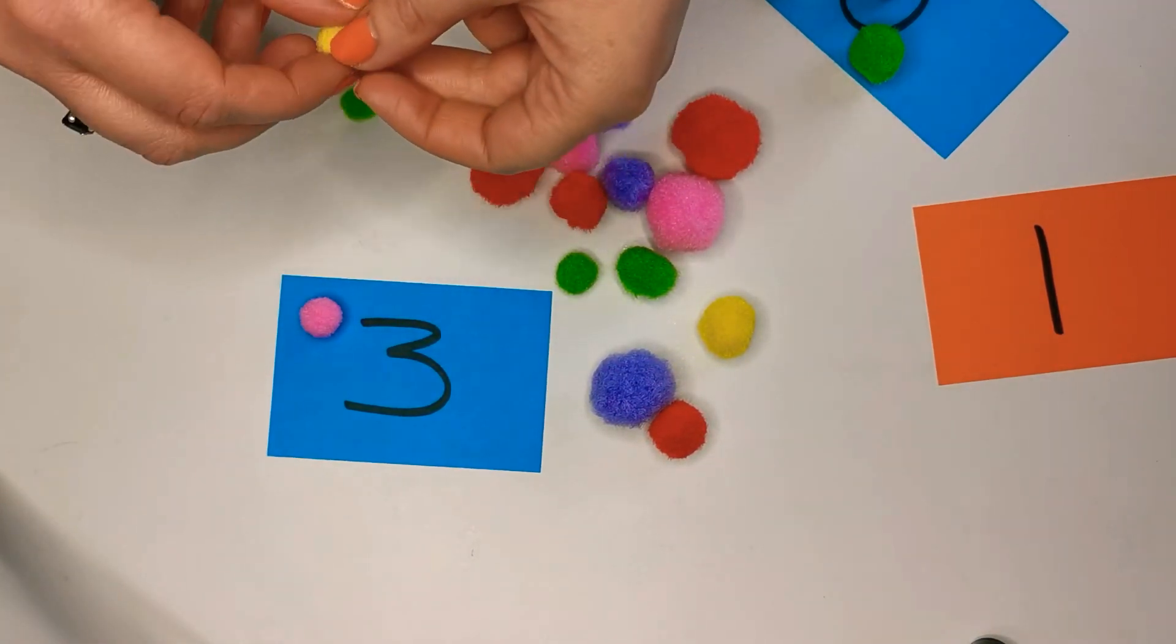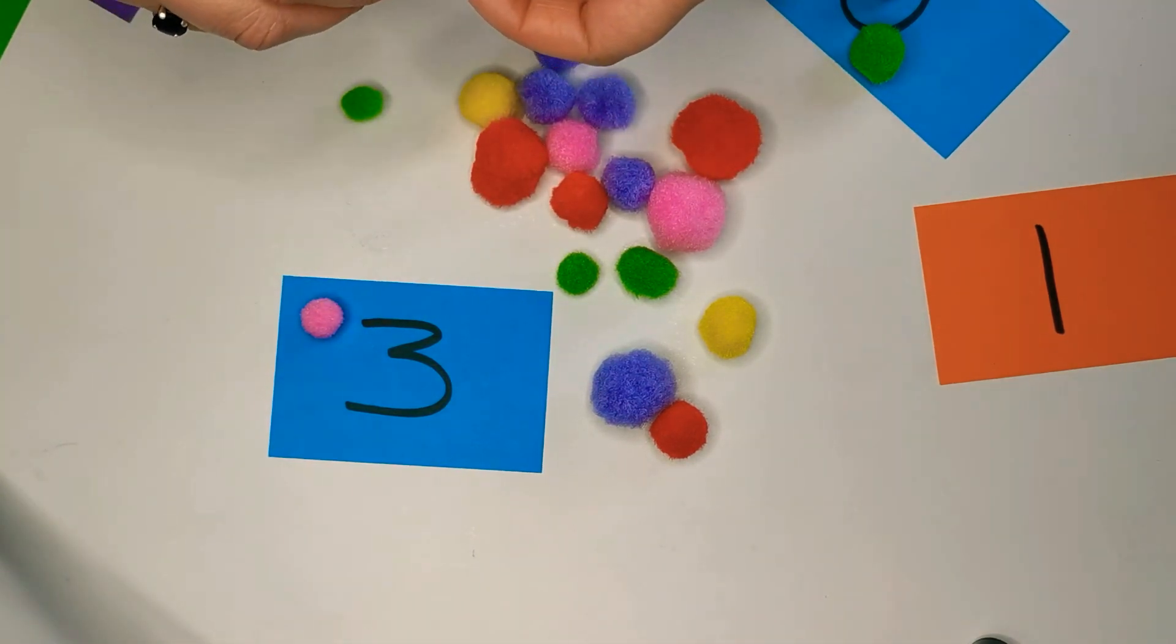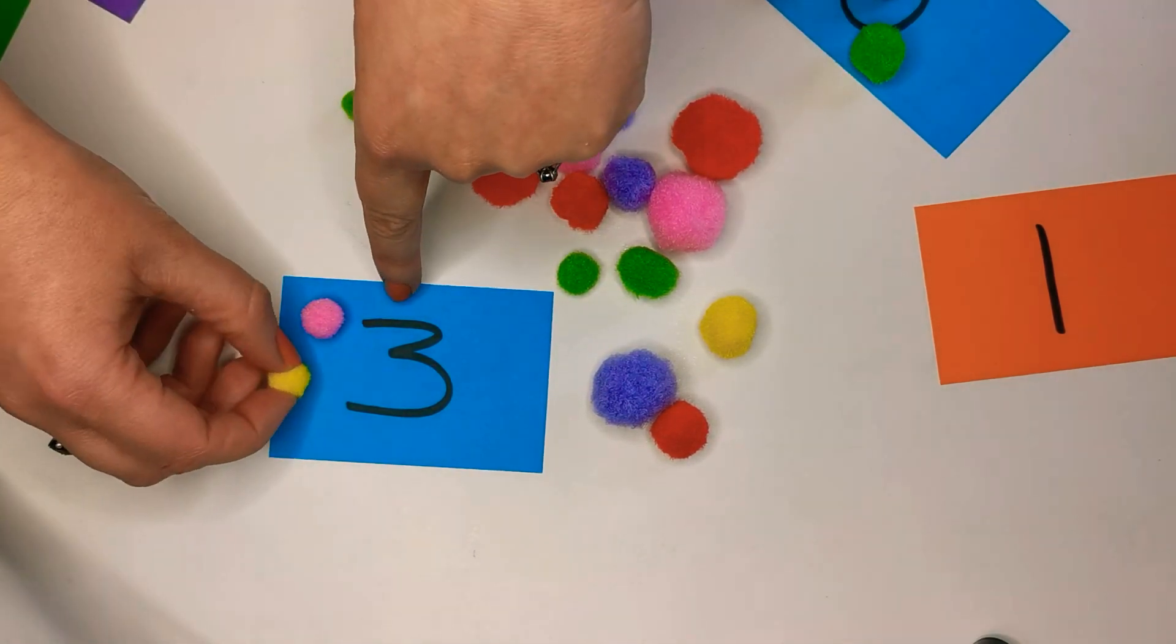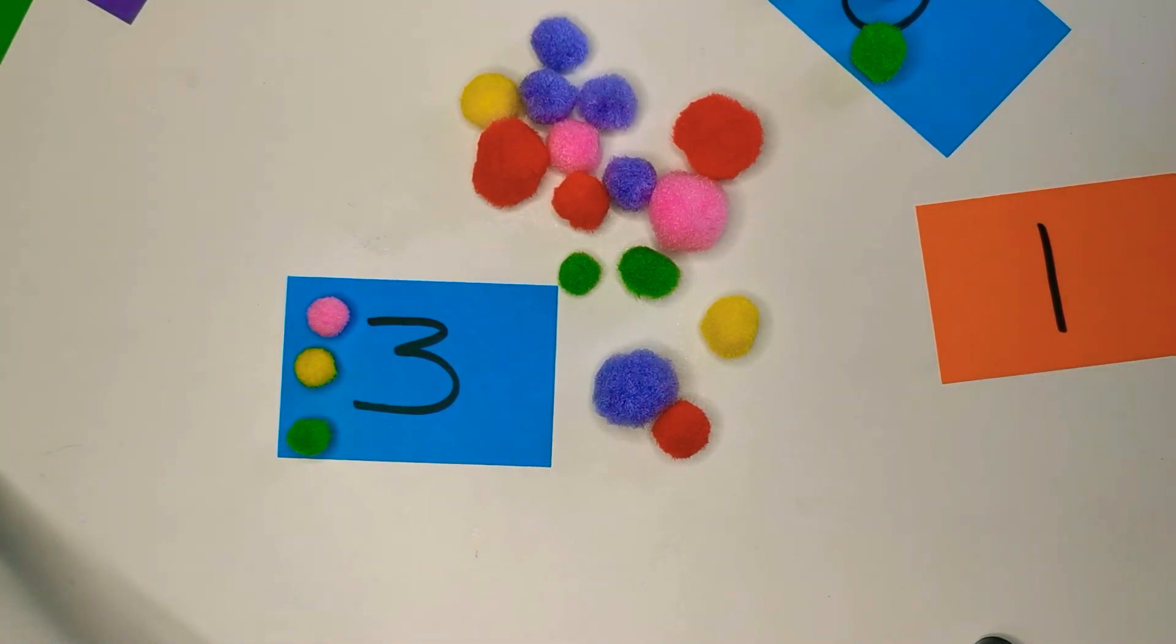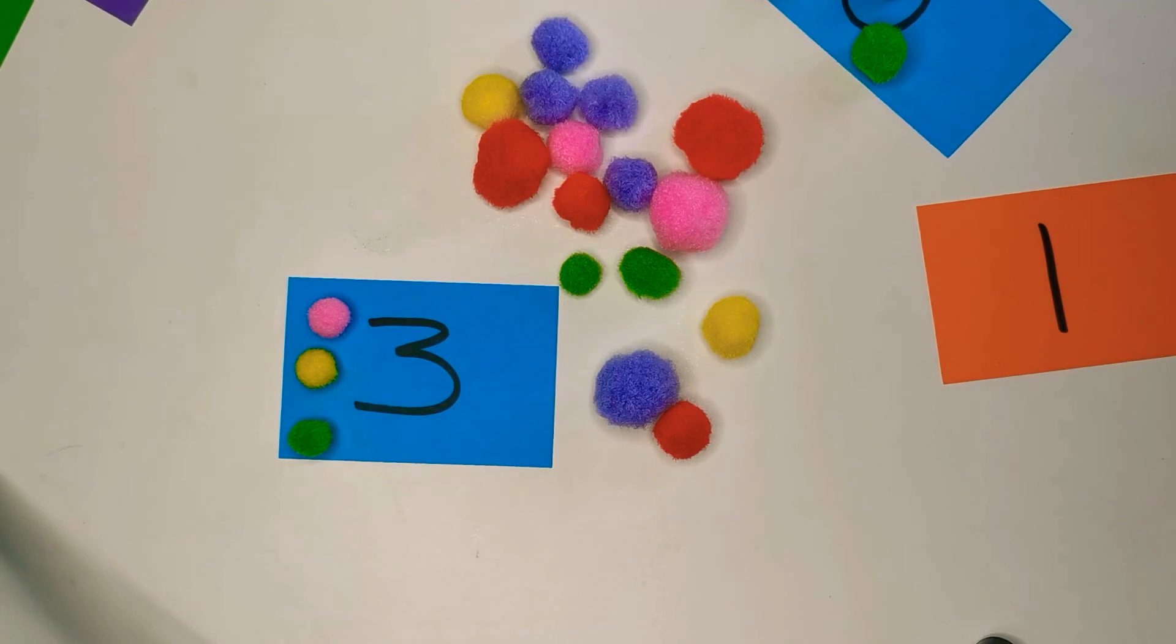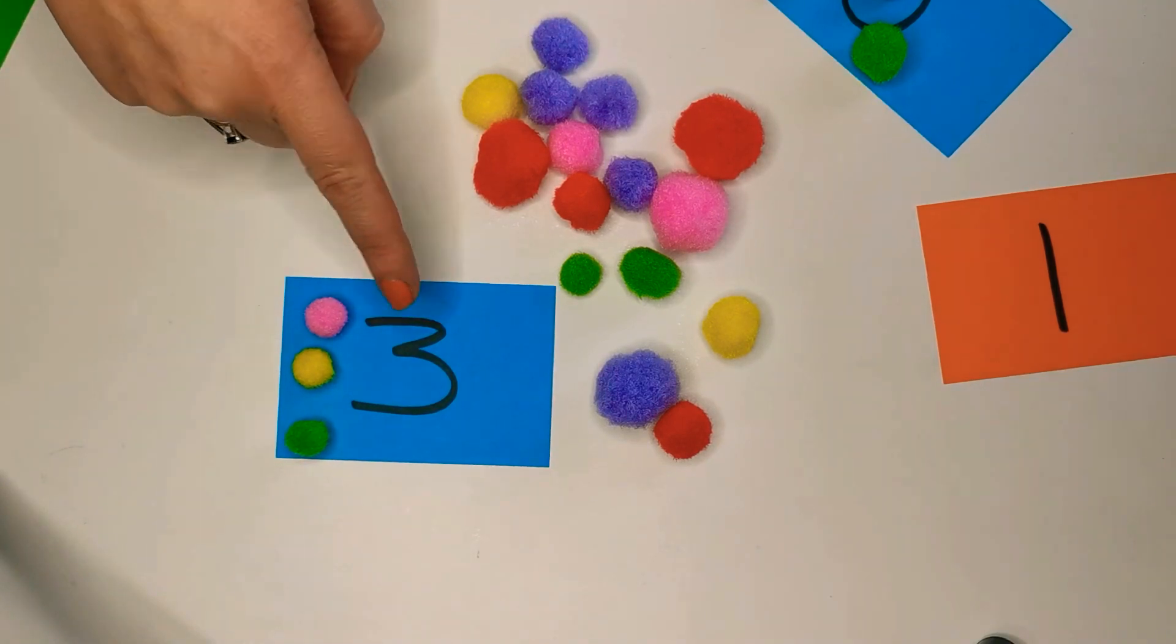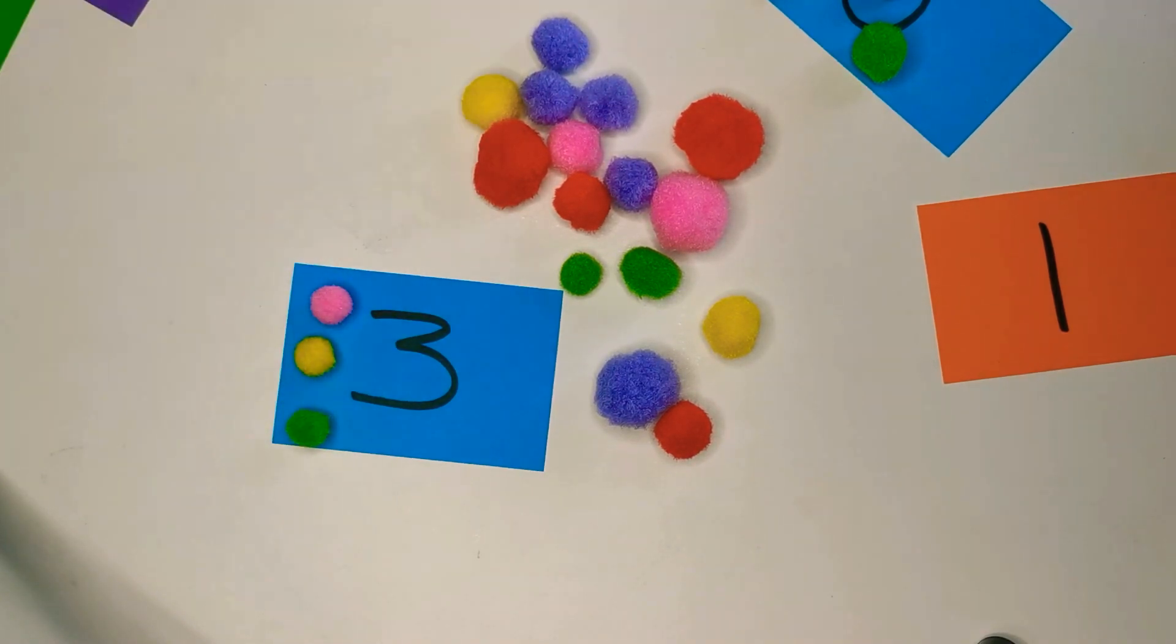I want you to keep practicing reading the number 3 and counting out only 3 objects. 1, 2, 3. So that's the first part of learning to add: recognizing numbers and counting out the correct number of objects.